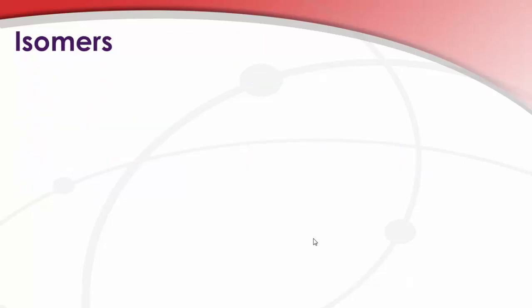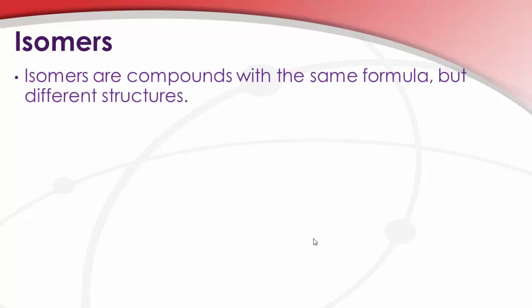And now it's time for us to start to talk about the concept of isomers. First, a definition. Isomers are compounds that have the same formula but different structures. And there are several different kinds of isomers. We're going to define three of them here so that we have them all in one place, and then we're going to focus on a couple of them specifically.